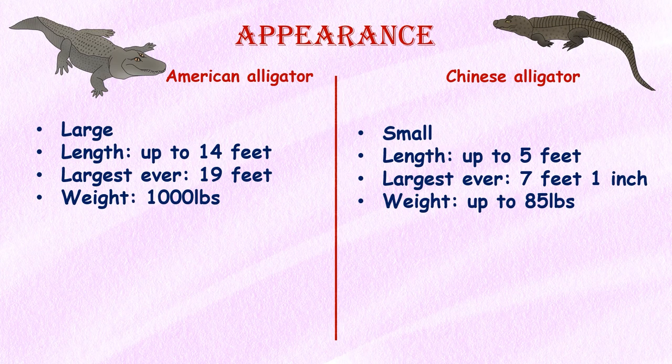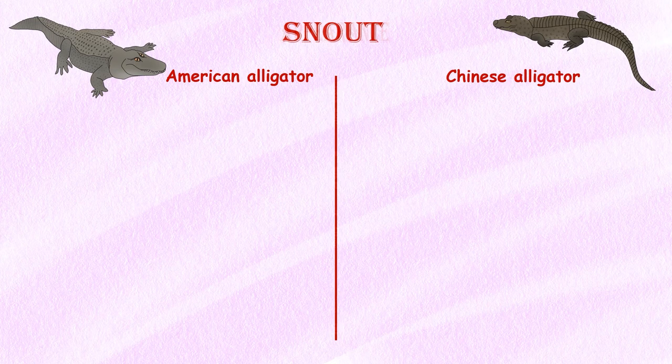Appearance. American alligators are much larger than Chinese alligators. Adult American alligators can grow up to 14 feet long and weigh over 1,000 pounds. The largest ever American alligator was 19 feet 3 inches, reported in Louisiana. Adult Chinese alligators typically grow to around 5 feet in length and weigh up to 85 pounds. The largest Chinese alligator measured in recent times was 7 feet and 1 inch.